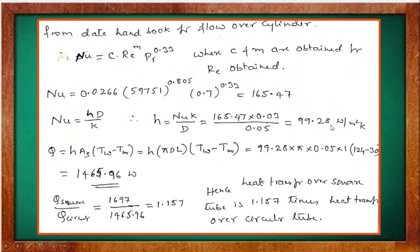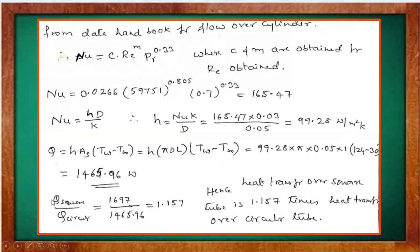For the circular cylinder, h = 99.28 W/m²K. The surface area is π × D × L. So Q = 99.28 × π × D × (Tw − T∞). Comparing both cases: the square tube heat transfer is 1.157 times that of the circular tube.